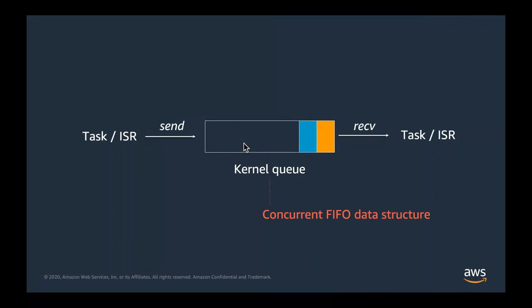Interestingly, the queue has to work in a concurrent setting — multiple writers, multiple readers, arbitrarily sending and receiving, with operations that can overlap in time. There are many interesting aspects to this data structure. One is this concurrent setting with tasks, which are entirely standard to the C consistency model, but also interrupt service routines, or ISRs — pieces of code that run in an event-driven manner when some hardware interrupt occurs.